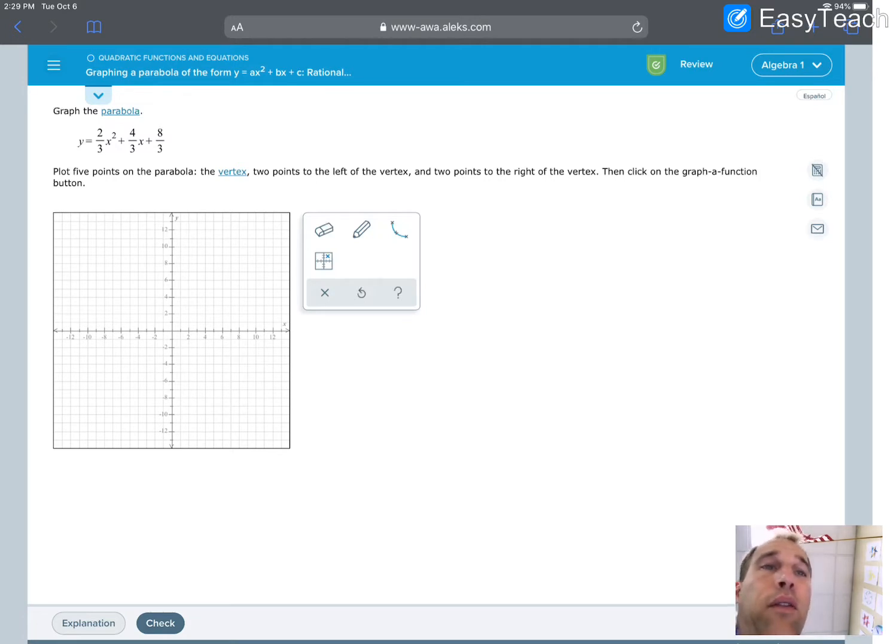If it were me, I'd love to just grab my graphing calculator, plug it in there, and find the graph. Now, that being said, it says find five points on the parabola, the vertex, and two points to the left, and two points to the right.